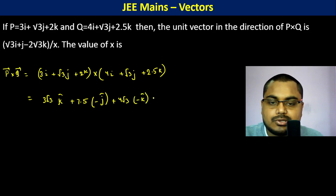Plus 2.5 root 3 i cap, plus 2k cross 4i is 8j, plus 2 root 3 j. k cross j is minus i.